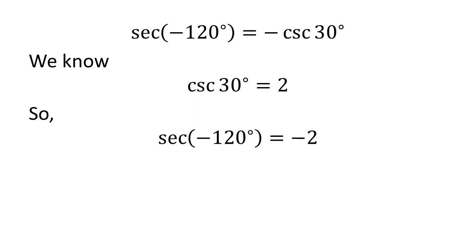So we get the value of secant of minus 120 degrees is equal to minus 2.